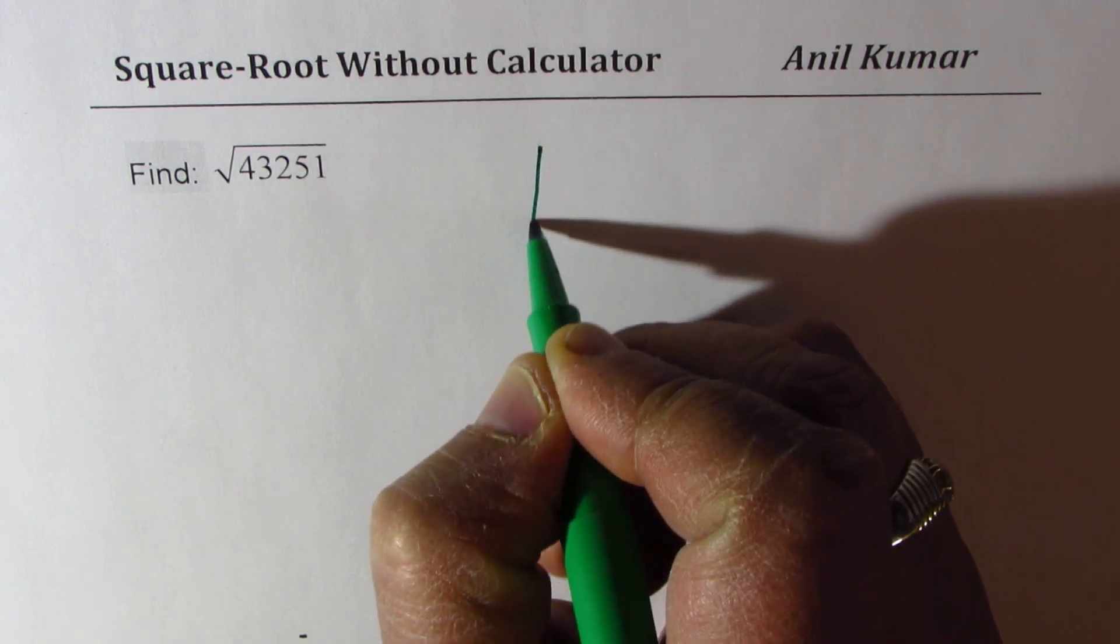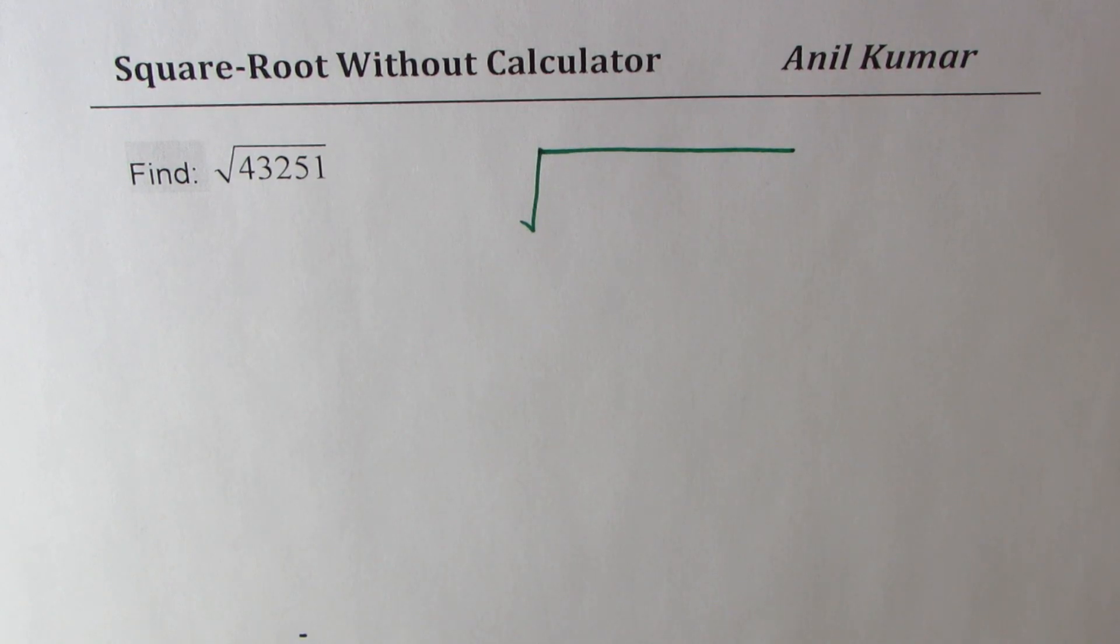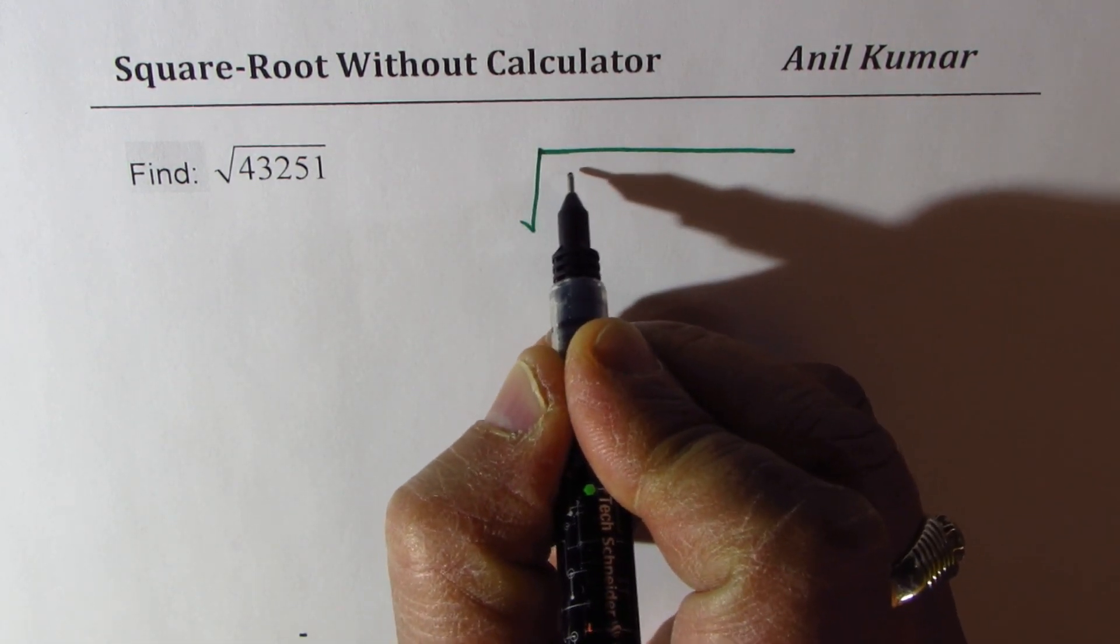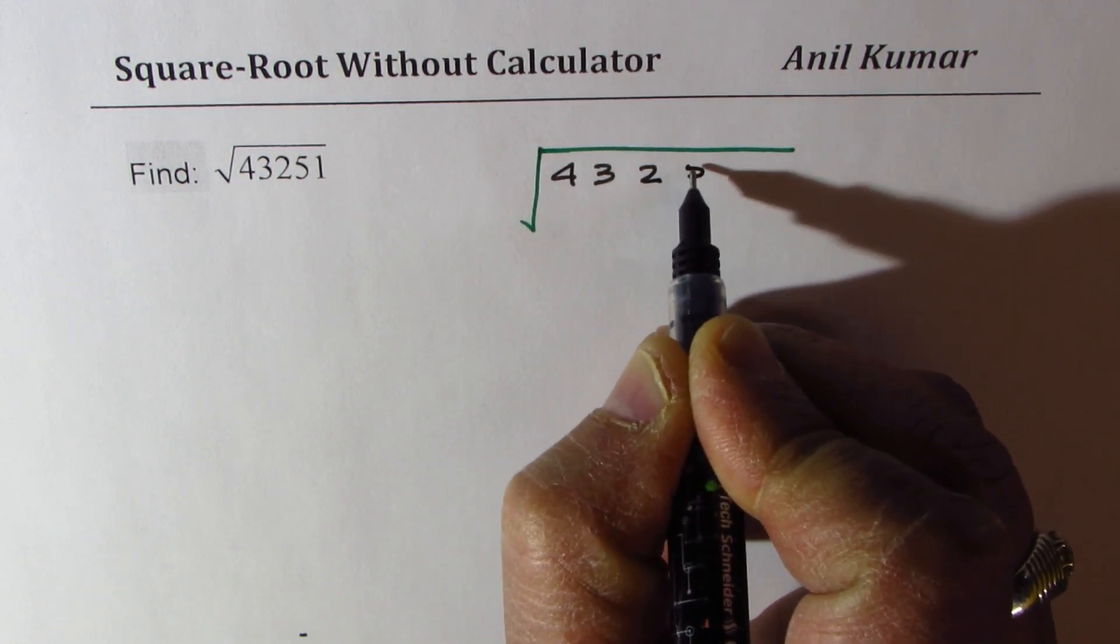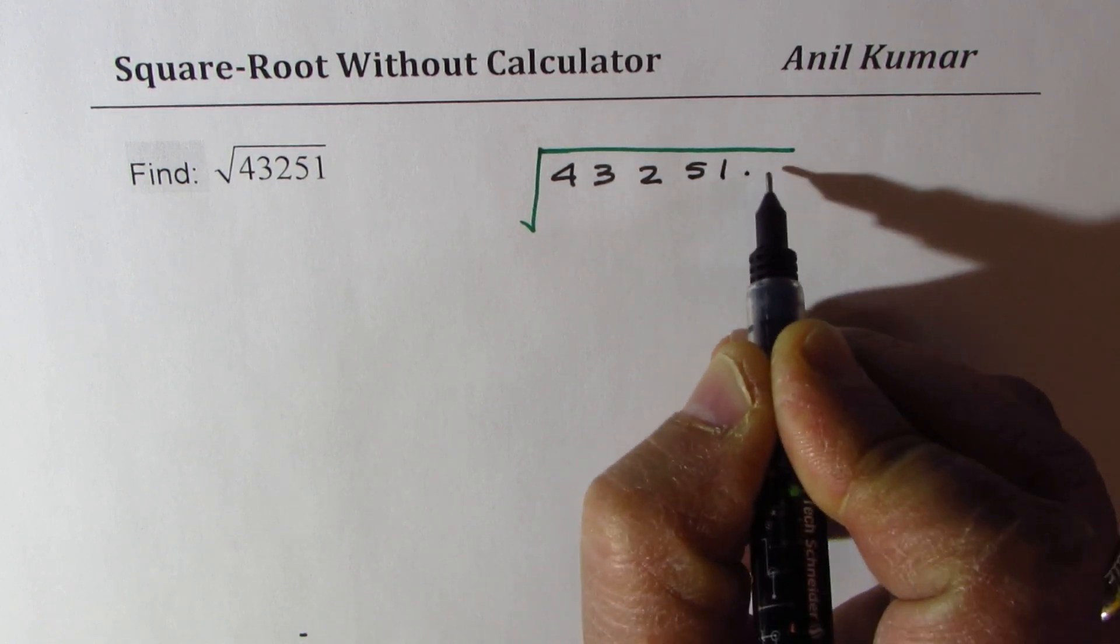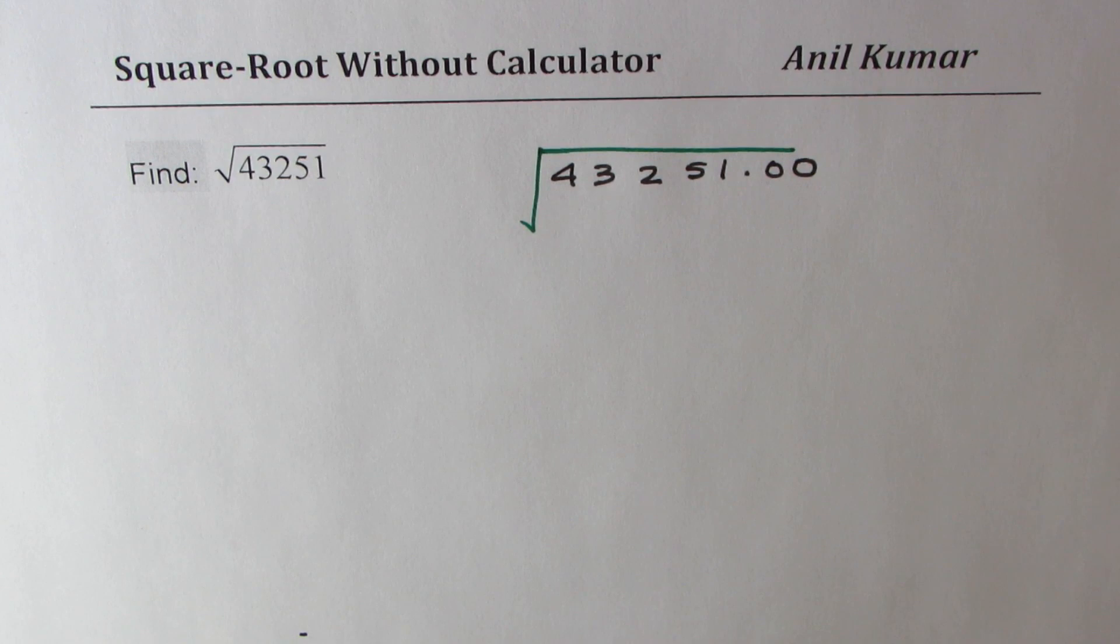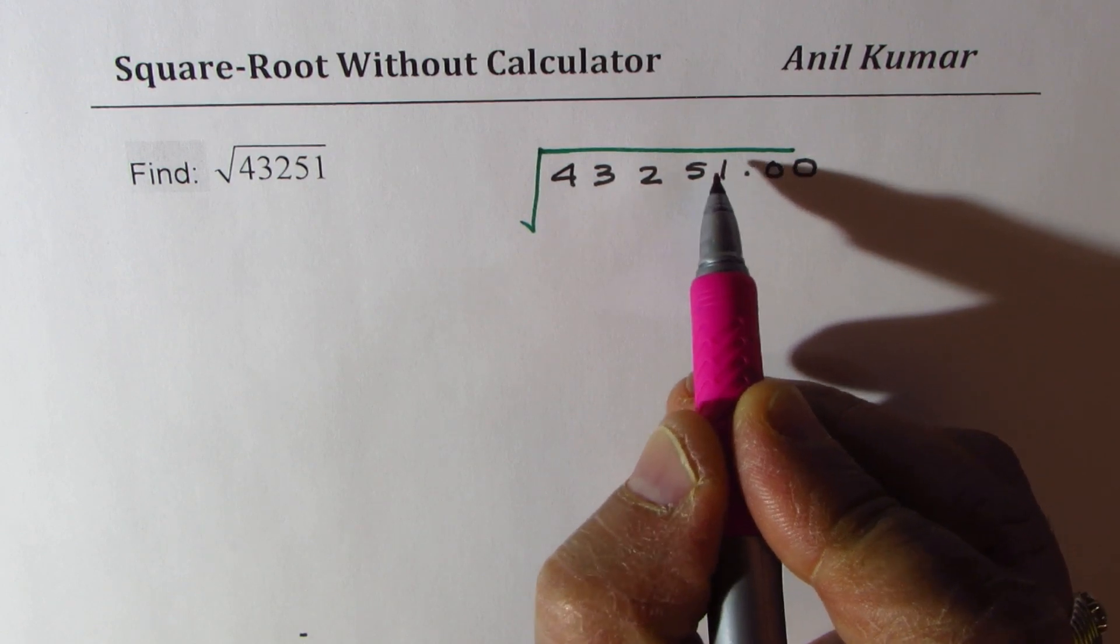To find square root of any number, we follow a very special division method. This process is similar to division. 43251 is the number we'll try to find to one decimal place. First step is to group the numbers into groups of two. Grouping is done from the decimal left and right side.